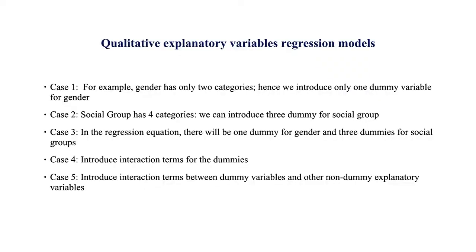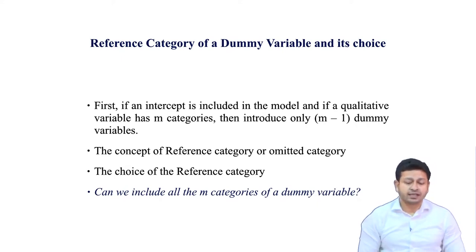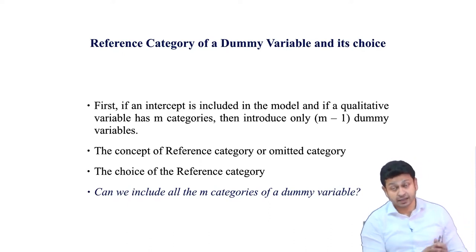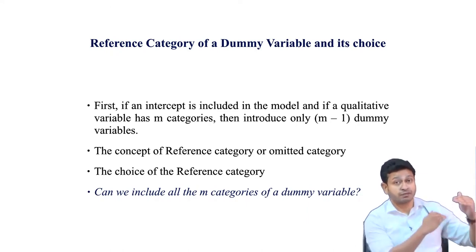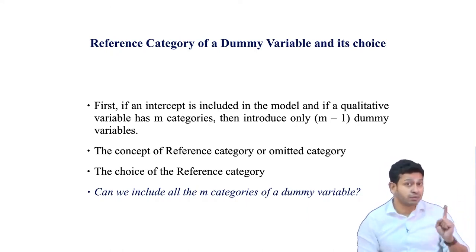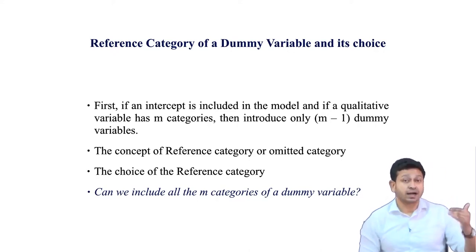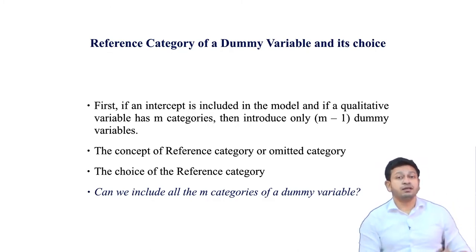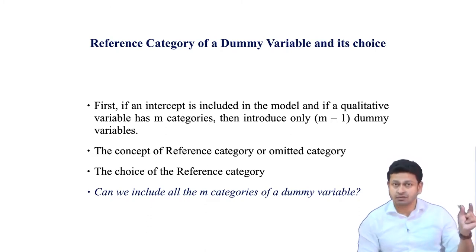For example, we have social group with four categories — that is case two. We have already seen the concept of a reference category: in any dummy variable setup, we must have a reference category. If I have a binary dummy like gender — male or female — with female as the reference category, I include only one dummy variable representing males, and the impact of gender change is reflected in that dummy variable's coefficient.